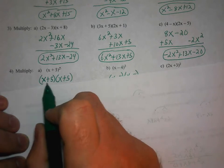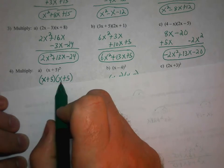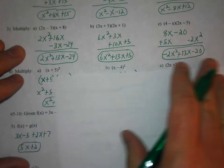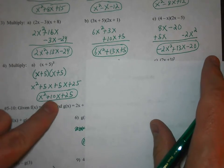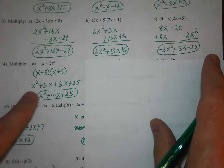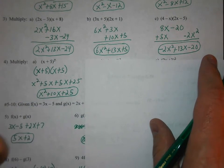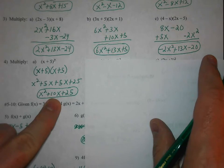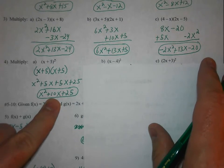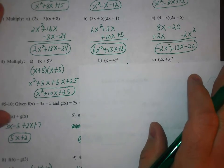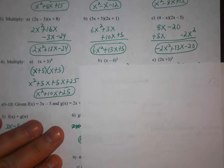So when you distribute, you end up with a middle term of 10x there. So x squared plus 5x plus 5x plus 25, you get 10x in the middle. And then if you try the last two there, again, pause the video and try those. And I'll show you the answers now.